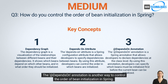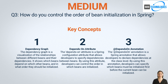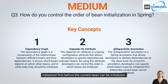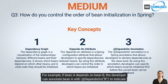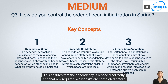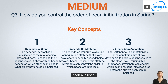The @DependsOn annotation is another way to control the order of bean initialization in Spring. This annotation allows developers to declare dependencies at the class level and specify which beans must be initialized first before the current bean can be initialized. For example, if bean A depends on bean B, the developer can annotate bean A with @DependsOn(B) to indicate that bean B must be initialized first, ensuring dependencies are resolved correctly.